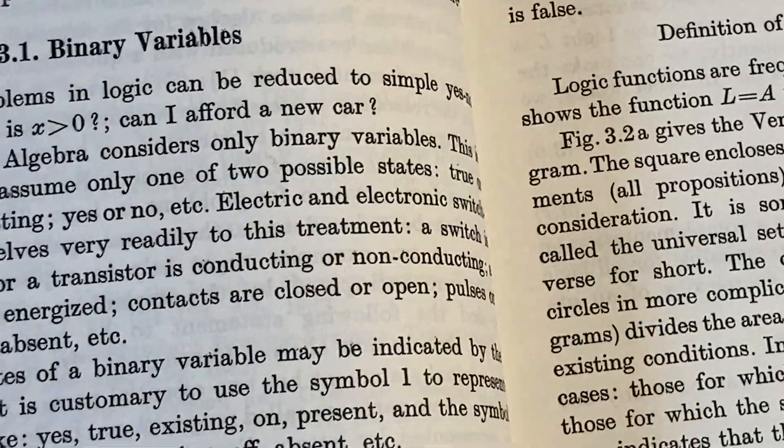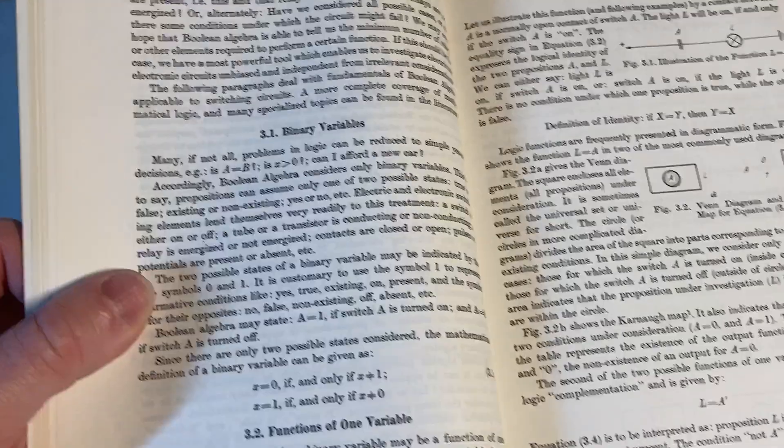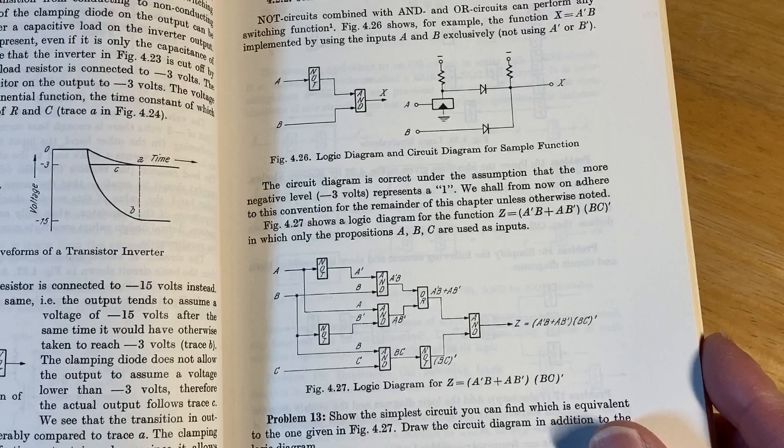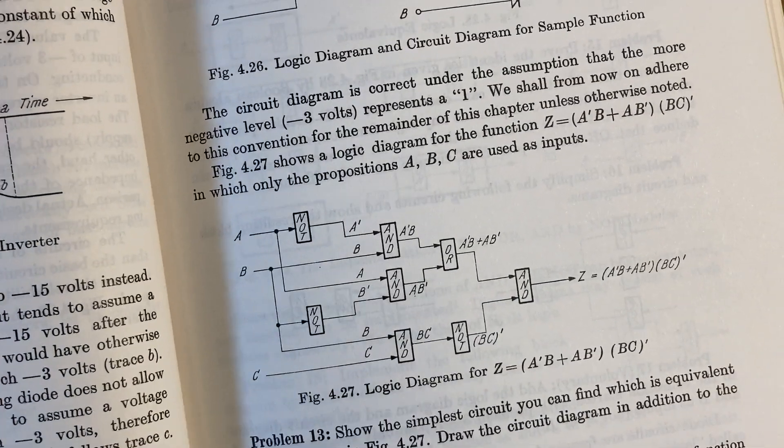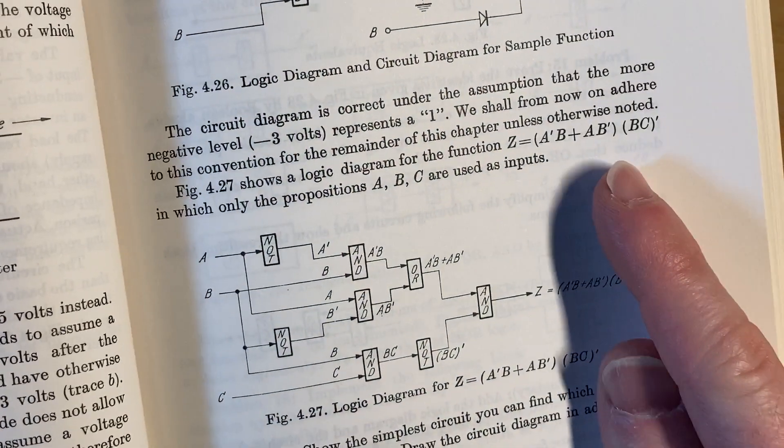Binary variables. So it's got a lot of interesting things, a lot of math. This is pretty cool here. So you've got nots and ands and ors. This is a logic diagram for this function here.